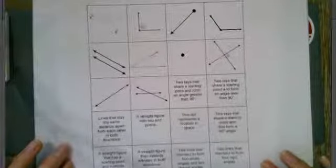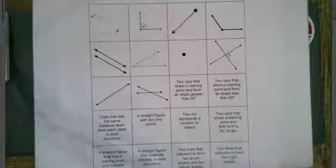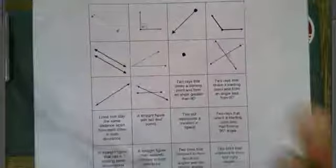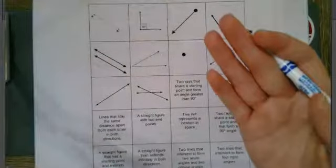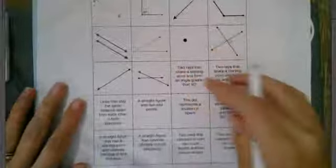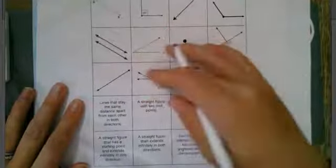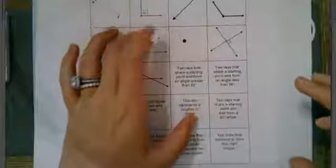And you are going to decide how you want to do the card sort. You could place them all face down and do like a matching game where you flip one over and then you want to match it with its visual. So sorry, I forgot to point out, these are the definitions here and these are the visuals. So you're going to want to sort the visual to the definition.